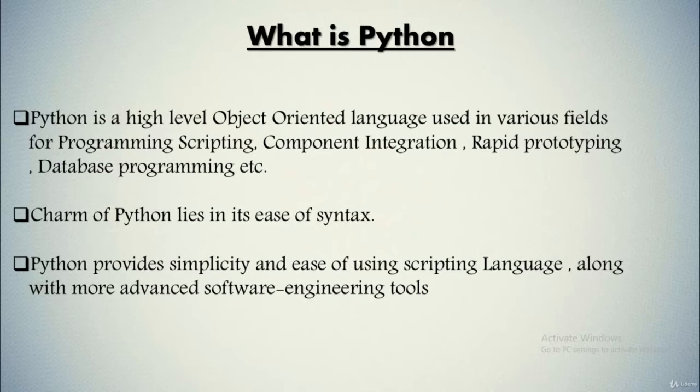The main charm of Python lies in its ease of syntax. It uses English keywords frequently whereas other languages use punctuation and has fewer syntactical constructions. Python provides simplicity and ease of using scripting language along with more advanced software engineering tools. It is a high level, interpreted, interactive, and object-oriented scripting language designed to be highly readable.